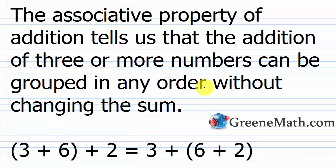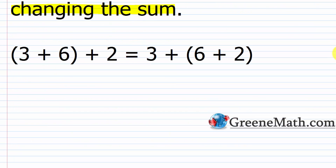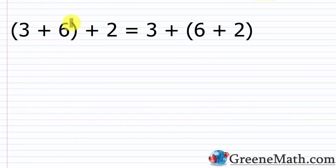The last property is the associative property of addition. It tells us that the addition of three or more numbers can be grouped in any order without changing the sum. For example, (three plus six) plus two equals three plus (six plus two). Since we're adding the same three numbers, it doesn't matter what we put parentheses around.